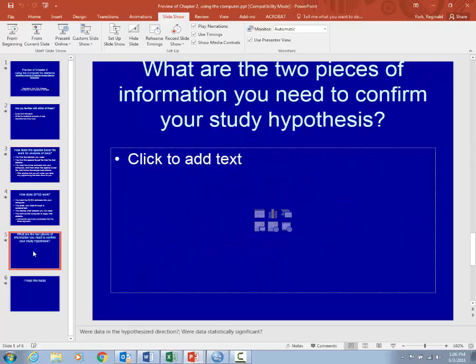Here's my last question. What are the two pieces of information you need to confirm your study hypothesis? You need to think about this before you use the chapter about using the computer. What do you need to know? Once you've analyzed your data, the question is, did your data confirm your hypothesis?